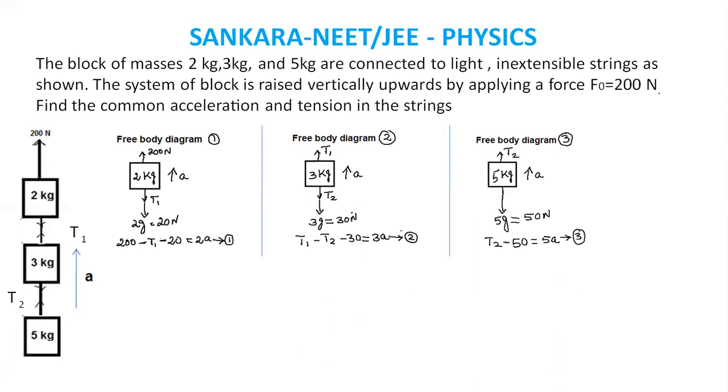Free body diagram for 5 kg: T2 minus 50 equals 5A. That is the third equation.